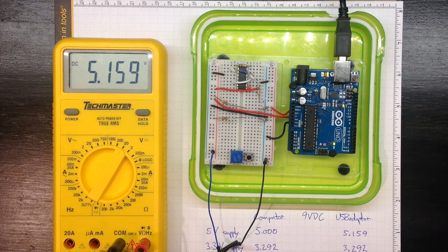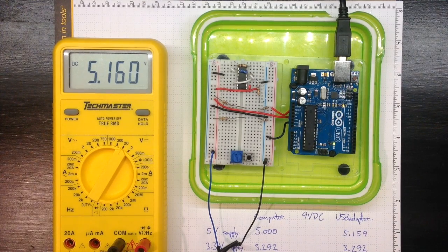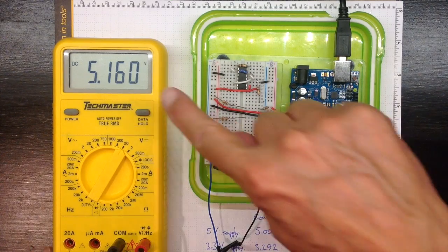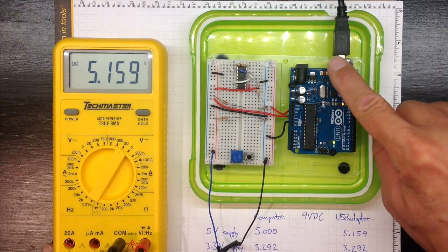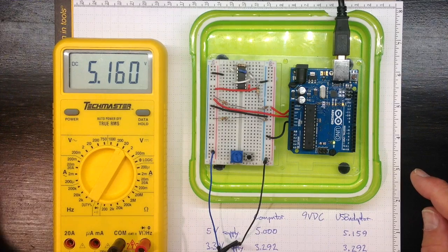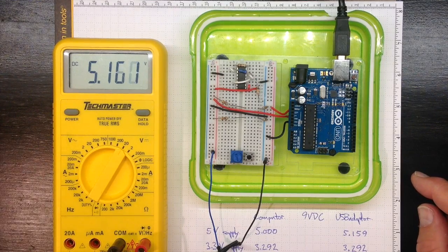So this USB supply actually provides a little bit more than 5 volts. And the USB standard allows the voltage that comes out of that USB supply to range anywhere between 4.75 and 5.25 volts. So that's not so bad.